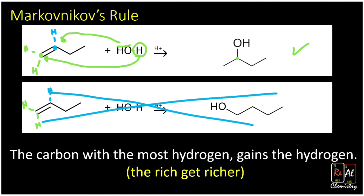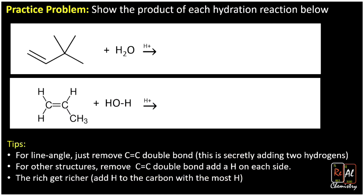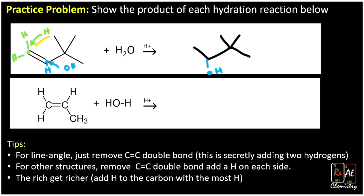Let's work a few more practice problems. We have a line angle alkene and we count the hydrogens. On the end carbon we have two hydrogens to get up to four bonds, and we have one hydrogen on the interior carbon. The hydrogen adds to the end carbon with two hydrogens, and the OH adds on that interior blue carbon. When we draw the product, we copy the structure, remove the double bond, add OH to the interior carbon, and because it's a line angle structure we don't need to draw the hydrogen.